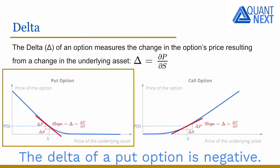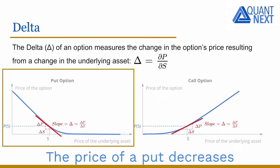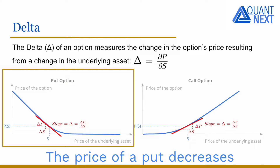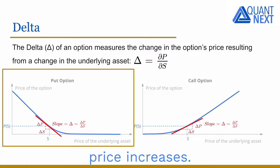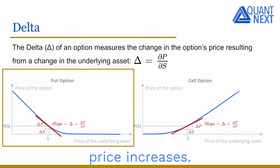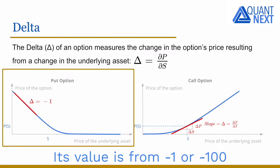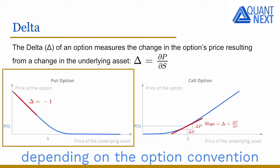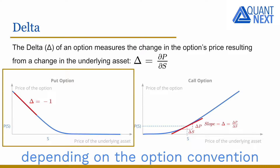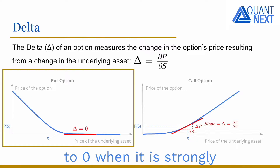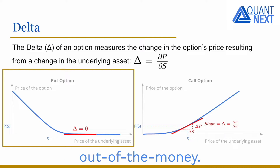The delta of a put option is negative. The price of a put decreases when the underlying asset price increases. Its value ranges from minus 1 (or minus 100, depending on the option convention) when it is deep in the money, to 0 when it is strongly out of the money.